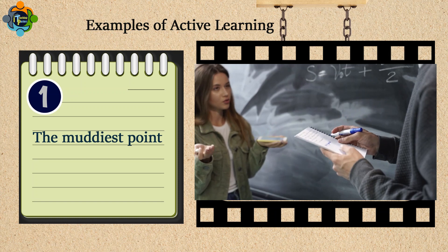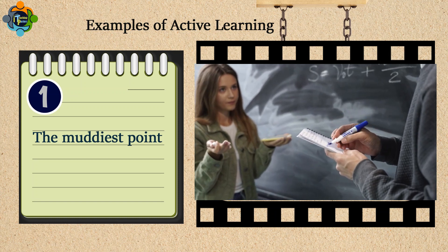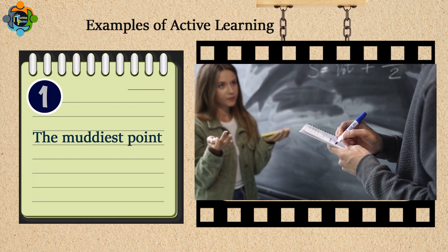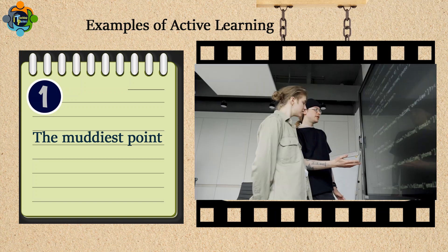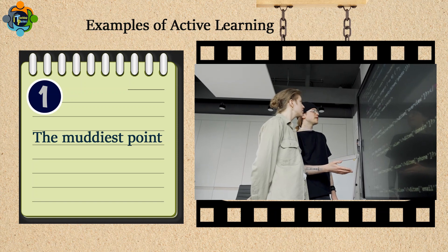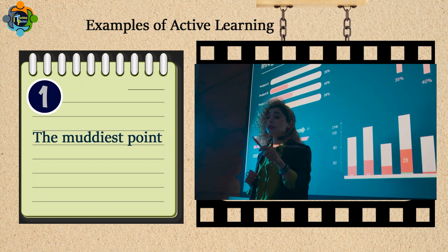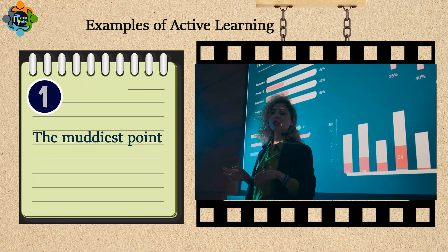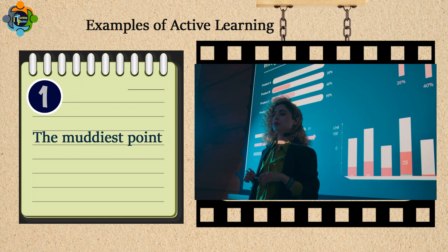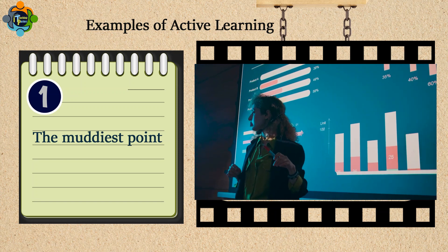In this activity, you ask children to reflect on the part of a lesson they found the most unclear or confusing. If you have an interactive whiteboard display, such as an active panel interactive display, you could get children to write or indicate on the whiteboard the topics they are most unclear about.